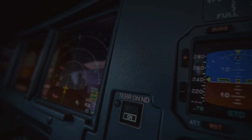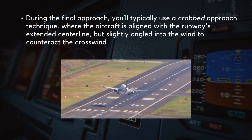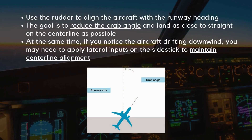When it comes to lateral and directional control, especially during crosswind landings, precision is key. During the final approach, you'll typically use a crabbed approach technique, where the aircraft is aligned with the runway's extended centerline but slightly angled into the wind to counteract the crosswind. During the flare, you'll need to use the rudder to align the aircraft with the runway heading, reducing the crab angle and landing as close to straight on the centerline as possible. If the aircraft is drifting downwind, apply lateral inputs on the side stick to maintain centerline alignment.